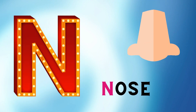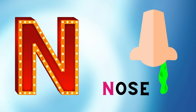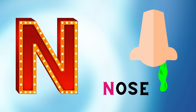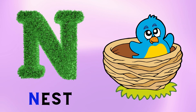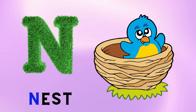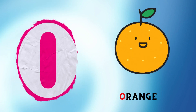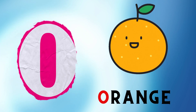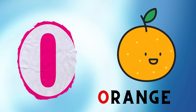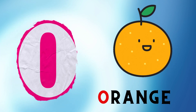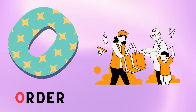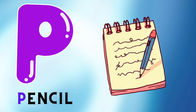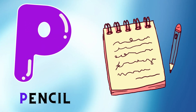N is for Nose. N, N, Nose. N is for Nest. N, N, Nest. O is for Orange. O, O, Orange. O is for Otter. O, O, Otter.